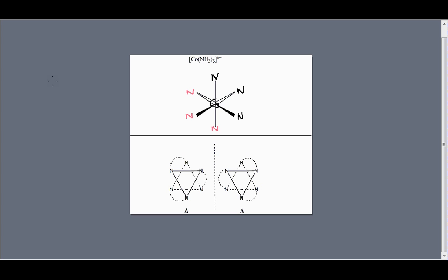And this species where we have 6 independent nitrogens and they're all of the same type would not actually exhibit optical activity, and I'll explain that in a little bit.